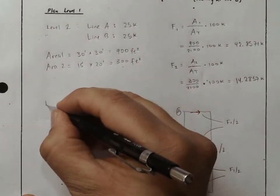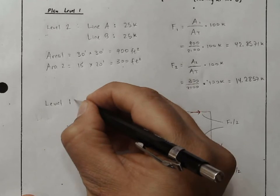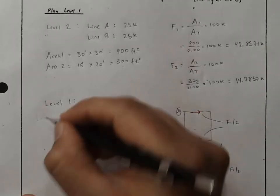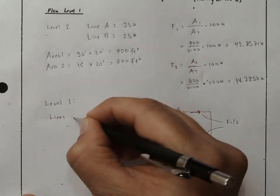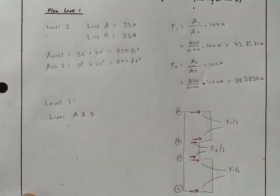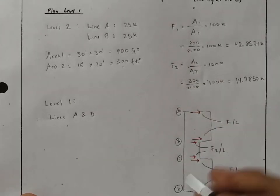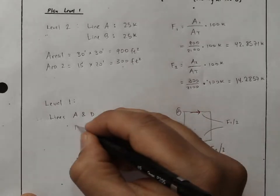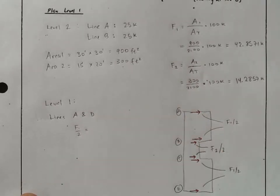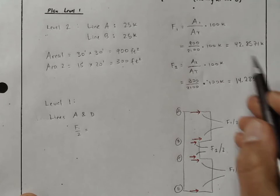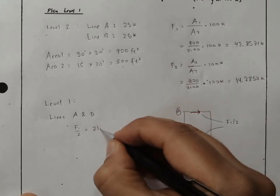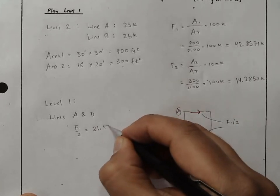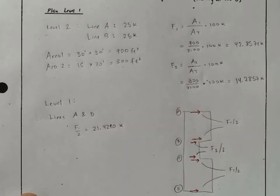So we have our calculations here for level 1, and we have lines A and D. These are the same calculations, they're F1 over 2, and that is equal to, if I take this number and divide it by 2, 21.4. We'll keep a few more decimals for intermediate calculations.